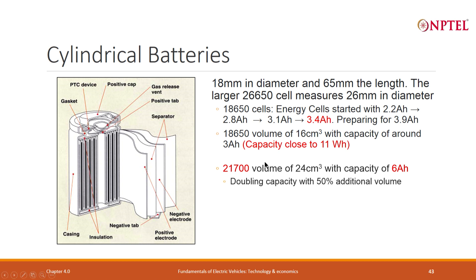The 21700 has a larger volume of 24 cm³ with a capacity of 6 AH — doubling the capacity with only 50% additional volume. That is what gives it its edge: capacity doubles from 3 AH to 6 AH, but size is only one and a half times larger — 24 cm³ versus 16 cm³. This is the attraction.